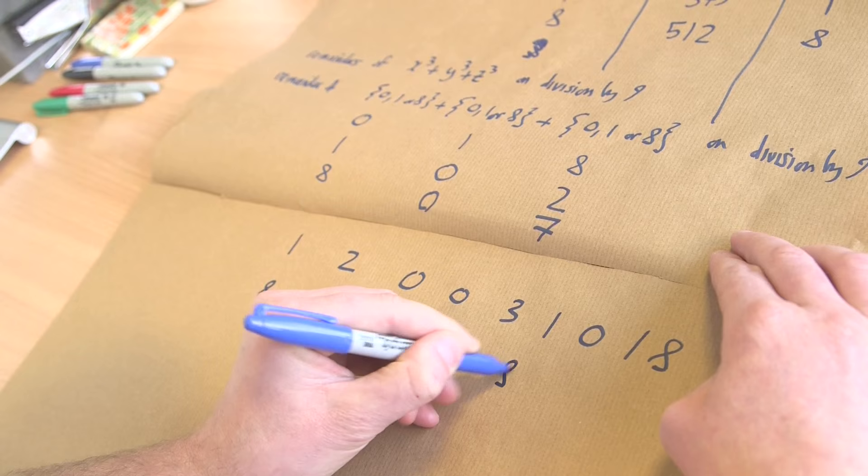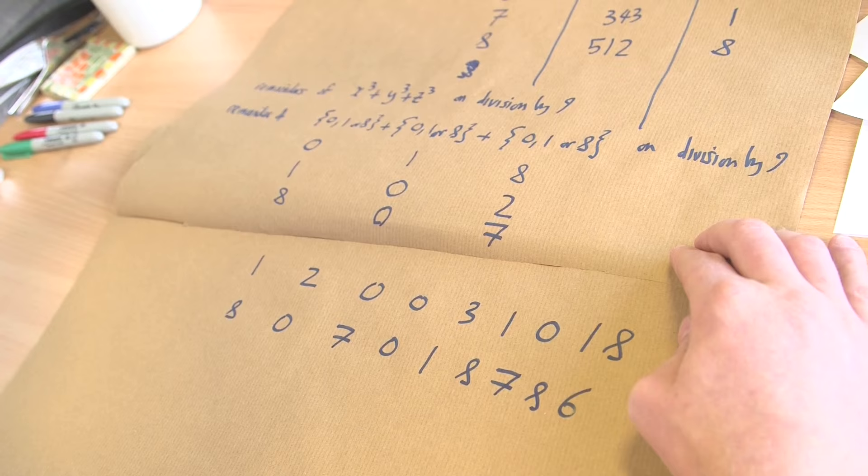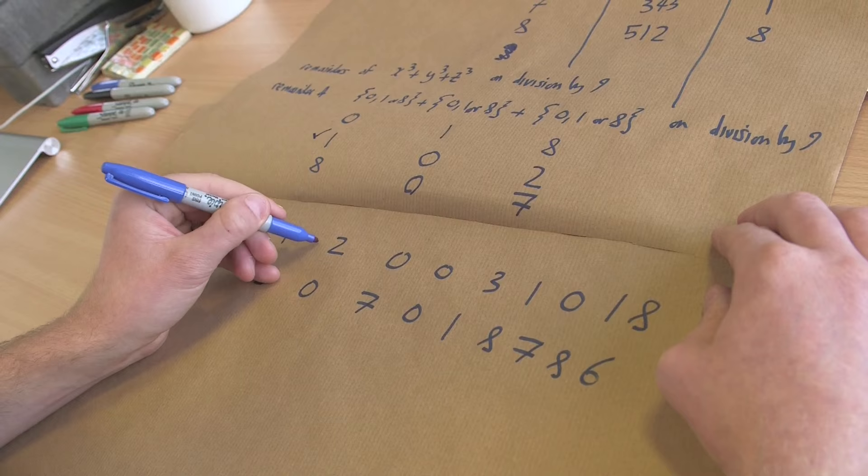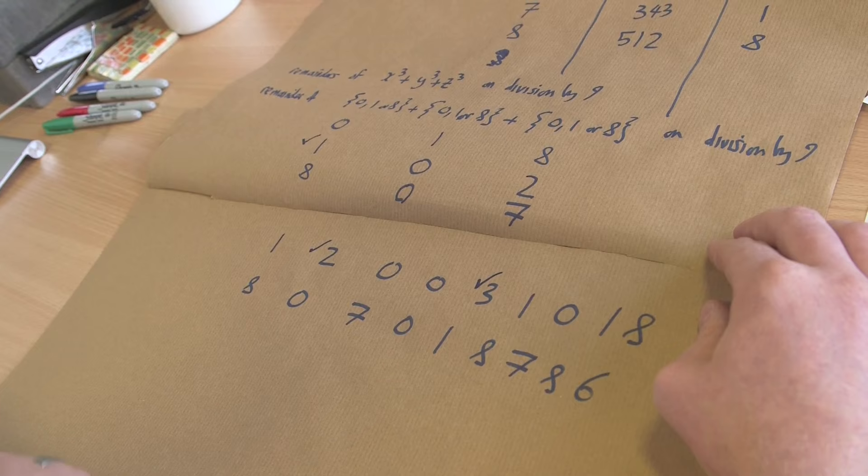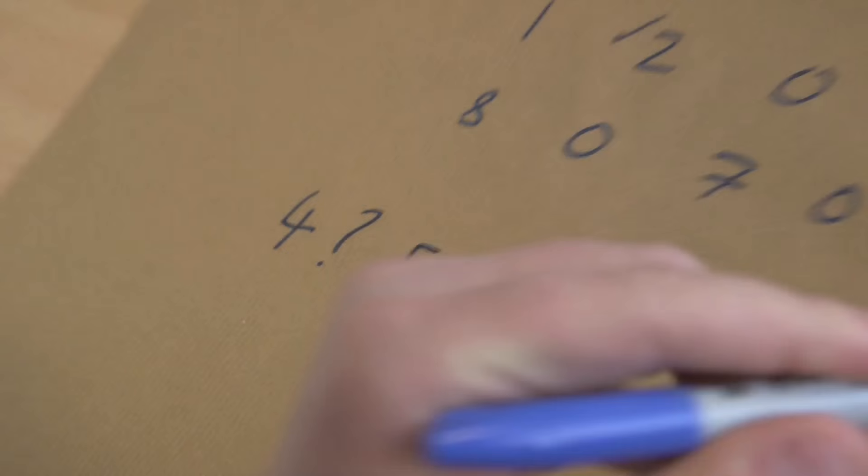So those are the 27 possible ways that you can add up these 3 numbers. And let's look at this list. What numbers are missing? So we've got 1, so 1 certainly appears. We've certainly got the number 2, number 3 appears. The number 4 isn't anywhere. The number 5 isn't anywhere. But certainly the number 6 is here and the number 7 and the number 8.